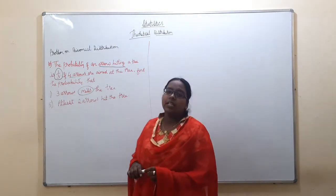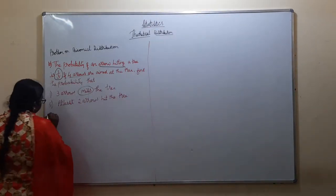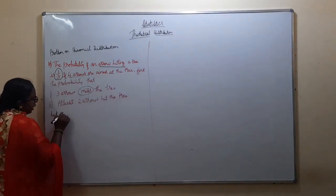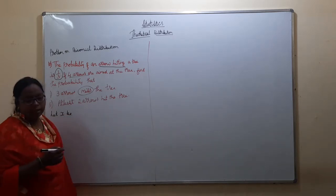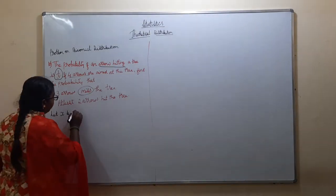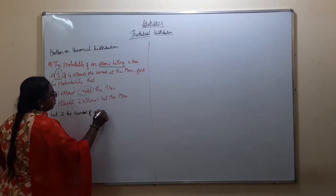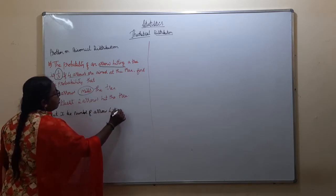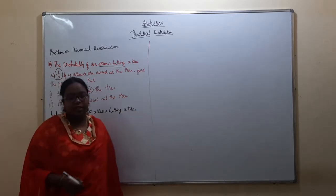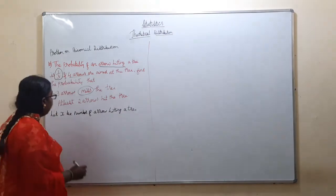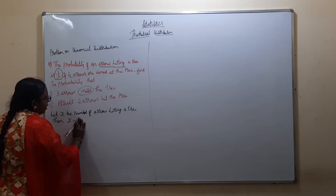Also find the probability that at least 2 arrows are hitting the tree. Let x be the number of arrows hitting a tree. x follows binomial distribution, that is n into p.